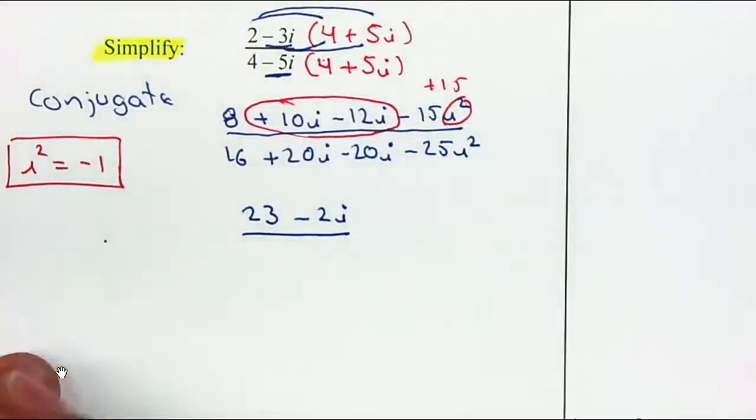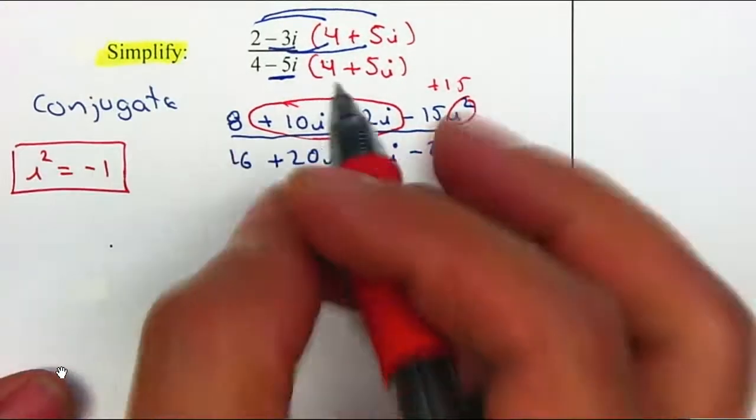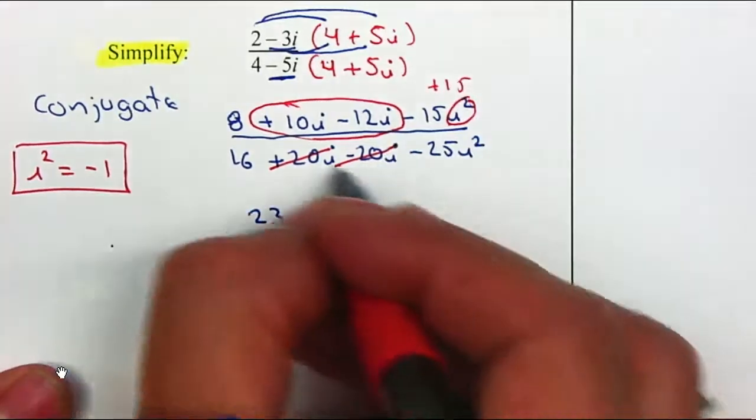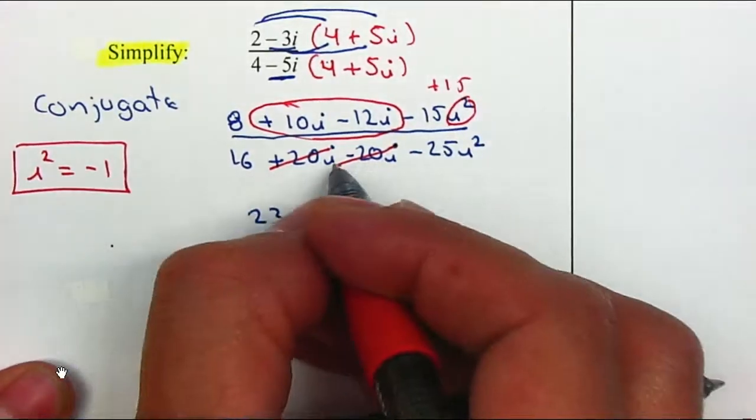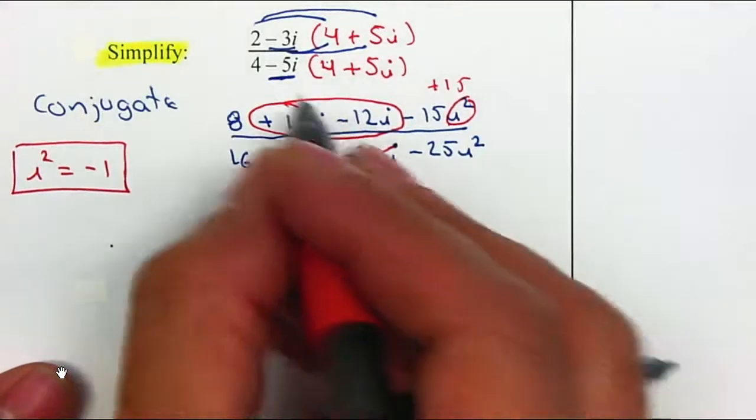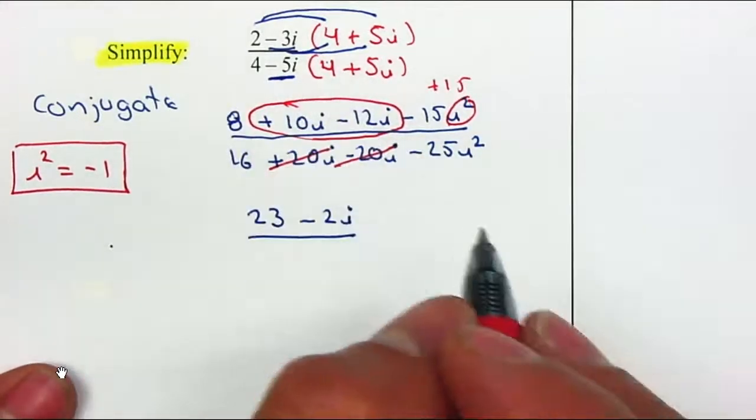We're going to do the same thing on the denominator. The 20i and negative 20i cancel. That should happen every time when you use the conjugate. Otherwise, you're doing something wrong and probably changed some signs incorrectly.